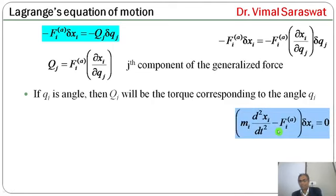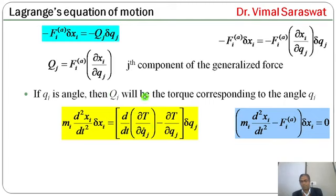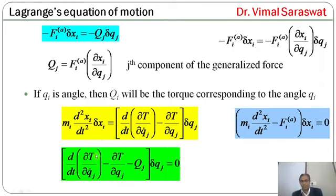Using D'Alembert's principle, substituting both terms: [d/dt(∂T/∂qj_dot) - ∂T/∂qj - Qj] * δqj = 0. Since the generalized coordinates qj are independent, all δqj can be arbitrary. For the product to be zero with arbitrary δqj, the coefficient of each δqj must vanish separately.